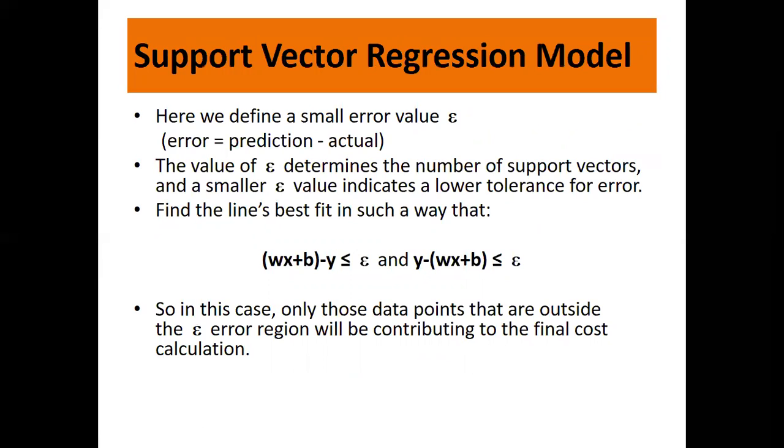The objective of SVR is to fit as many data points as possible without violating the margin. In SVM, support vectors define the hyperplane, but in SVR they are used to define the linear regression. We define a small error value epsilon where error equals prediction minus actual. The value of epsilon determines the number of support vectors, and a smaller epsilon value indicates lower tolerance for error.